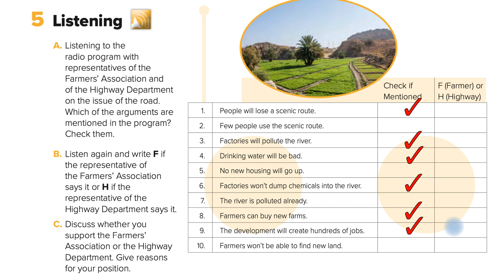Now you're supposed to listen again and write F if the representative of the farmers association says it, or H if the representative of the highway department says it.